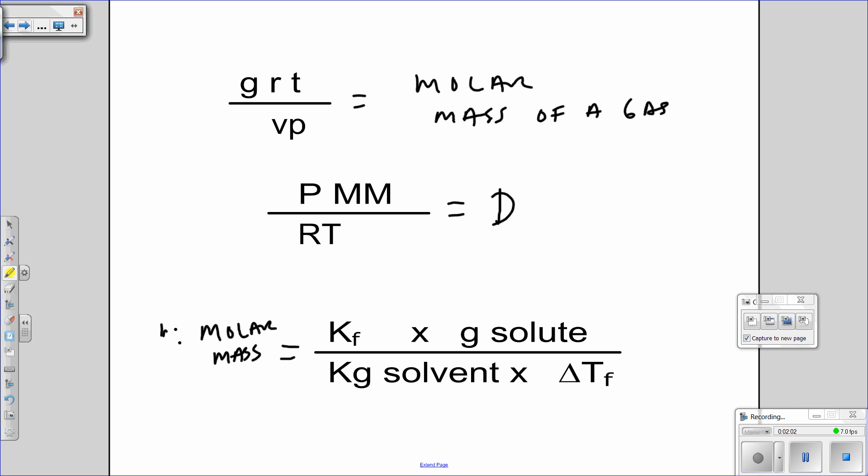Next, three other things that come up in both the multiple choice and the free response. Molar mass of a gas, whenever they ask you to calculate molar mass of a gas, you can write GRT over VP. That's not going to be in the booklet, but you're going to add it there. The density of a gas is PMM over RT. P is pressure in atmospheres, MM is molar mass, R is just the gas constant, which is 0.0821, and temperature's in Kelvin. That's how you get the density of a gas.